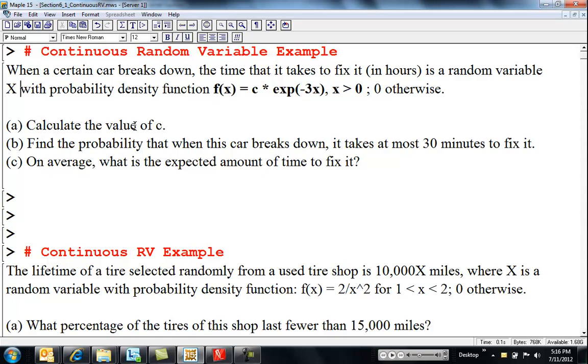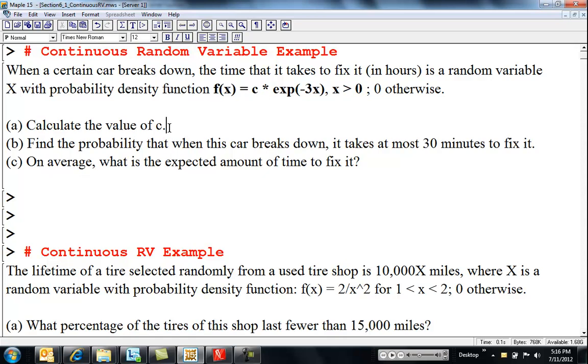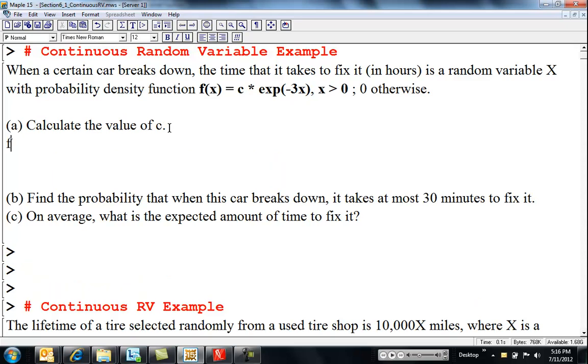First, I'm supposed to find the value c that makes this a valid function. To be a valid probability mass function, f of x has to be greater than or equal to zero for all x's, which means if you graph it, it has to sit above the x-axis.